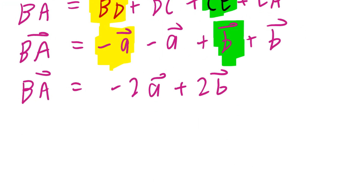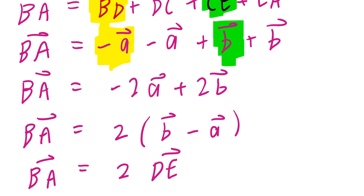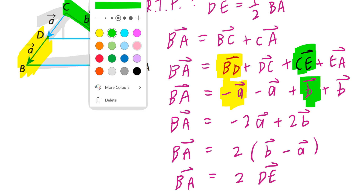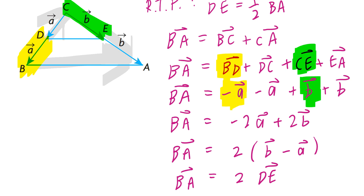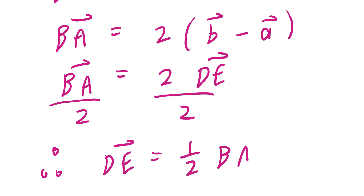So vector BA equals negative 2A plus 2B. Now, if you factor 2 to the front — there's a common factor — you get 2 times the quantity (vector B minus vector A). And what does that really mean? This is exactly the same as vector DE. Going back to the graph, vector DE goes from D to E, and vector DE is the same as taking B minus A. Therefore, dividing both sides by 2, vector DE equals half times vector BA.